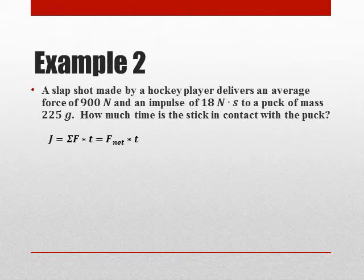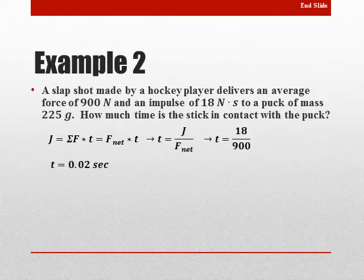Well if we go back to the original equation, where impulse equals net force times time, in order to find time we have to divide both sides by net force, so we get impulse divided by force, and that's going to be equal to 18 divided by 900, which gives us a total time of 0.02 seconds that the puck and the stick are going to be in contact with each other.